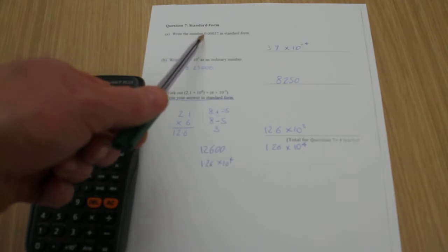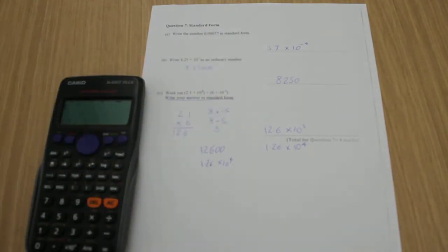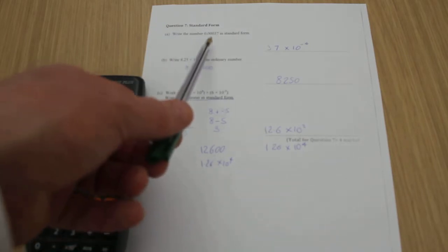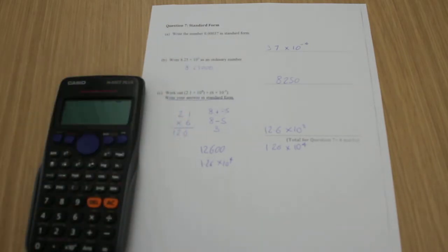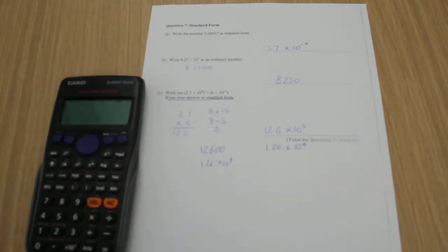So I've got 0.00037, and the way to do that is I need to turn this into a number between 1 and 9.9 recurring. So I put my decimal point between the 3 and the 7, so I've written 3.7 down there.